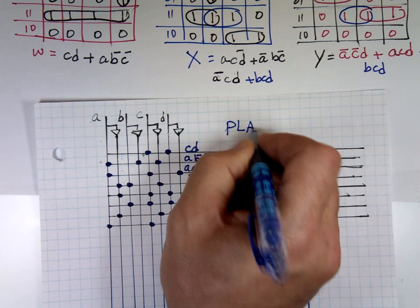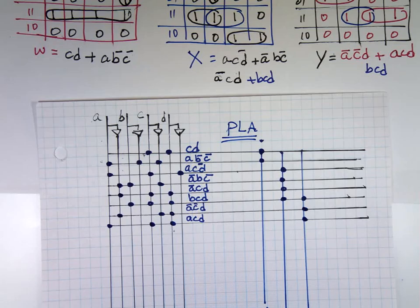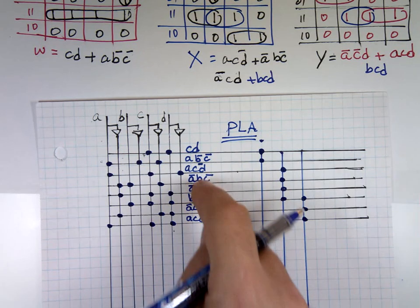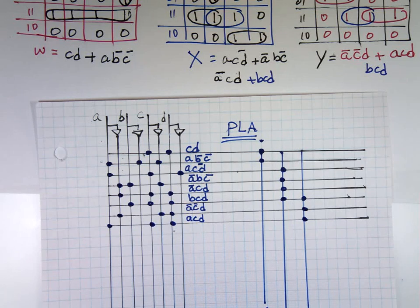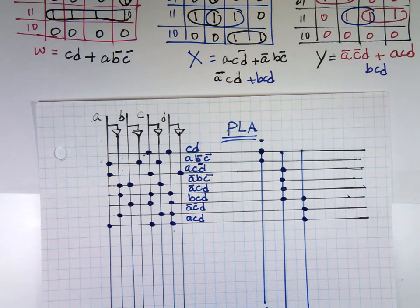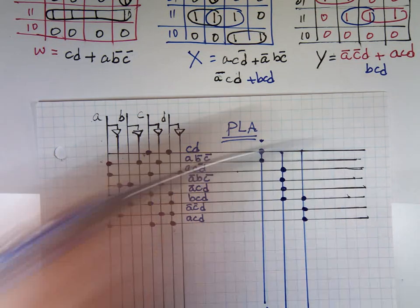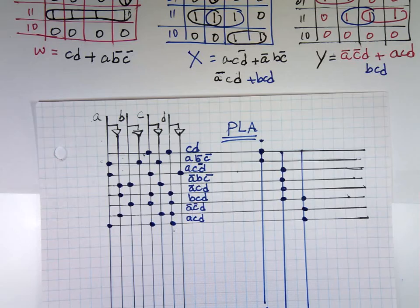So when the person at the shop gets this, they say: I need one, two, three, four, five, six, seven, eight AND gates and three OR gates, and they know what to attach to each one. The difference between ROM and PLA is that ROM has to list all the combinations, while PLA only lists the specific functions. So it's shorter and easier.